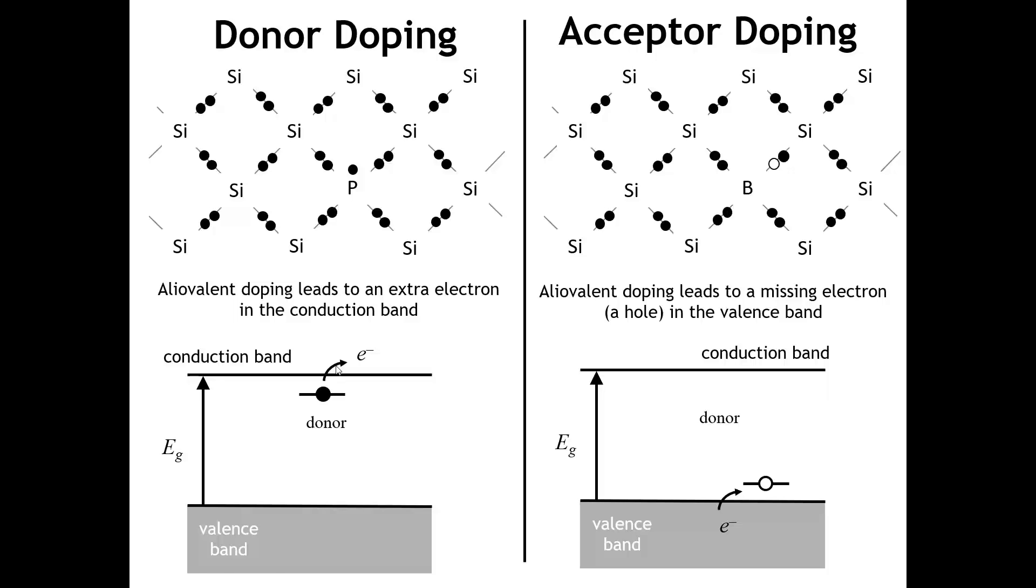And so that electron is going to be able to move through the crystal relatively easily. From the perspective of a band picture, because phosphorus has one more electron, you can see that we fill up the states in the valence band, and we have an extra electron that has an energy quite close to that of the conduction band. And it can easily be excited away from the phosphorus, moving into the conduction band where it can move freely through the crystal.